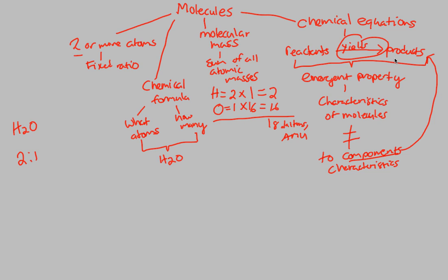So this covers what a molecule is—two or more atoms. There's a chemical formula involved like H2O, there's a molecular mass that you can easily solve using any chemical formula, and then chemical formulas are useful when we're looking at chemical equations, when we're going from reactants to products, which is a direct example of our emergent property that we talked about in our earlier lecture. Thank you.